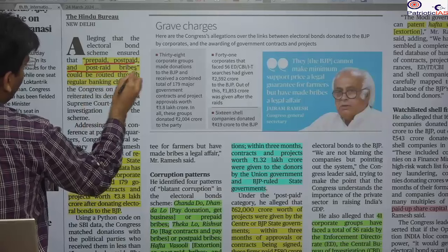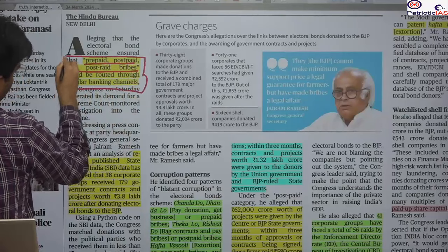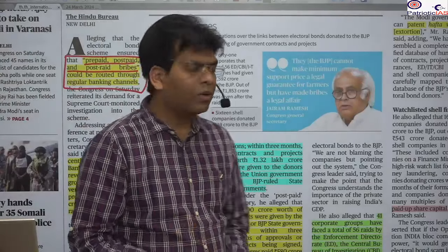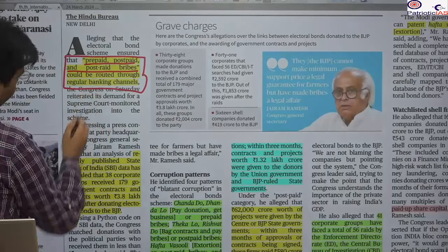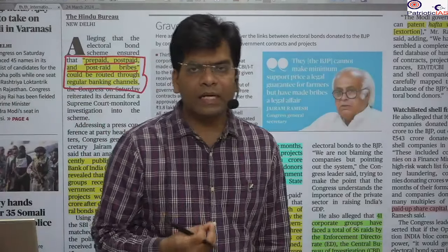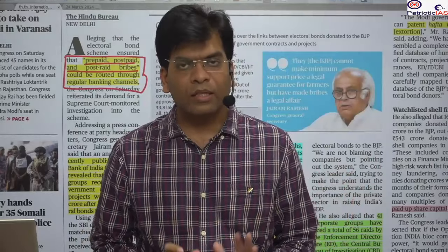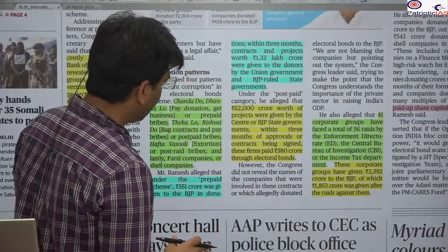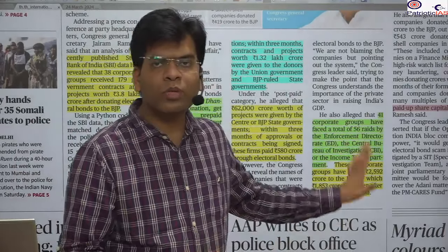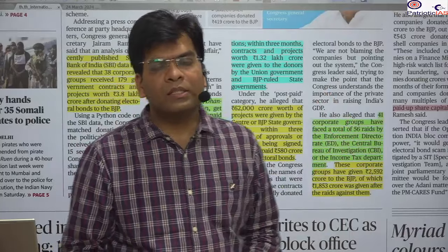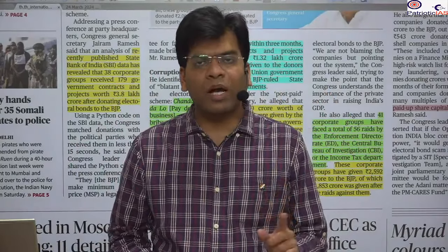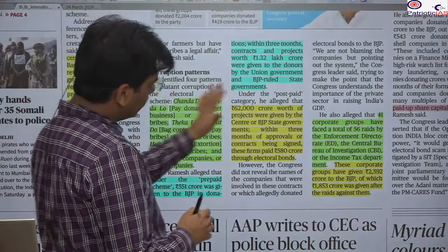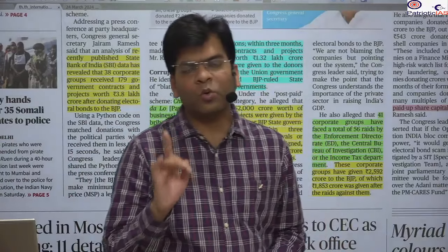This is mainly an allegation from the opposition party Congress. There were pre-paid and post-paid bribe methods — either you pay first and then get a contract, or you get the contract and then pay. Government agencies such as the ED and CBI reportedly raided companies, after which companies were forced to pay via electoral bonds. The Supreme Court forced SBI to declare who paid whom and how much.